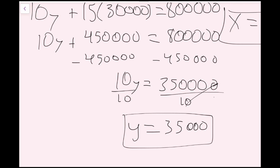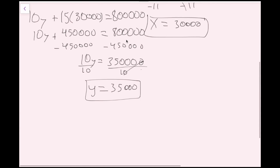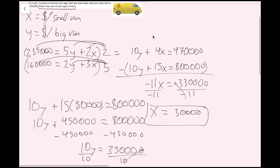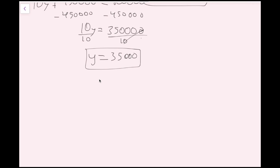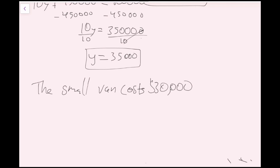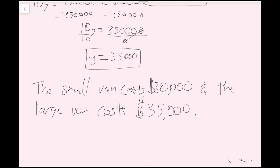The last step is to include a word answer. x, the small van, costs $30,000 and y, the large van, costs $35,000. So: the small van costs $30,000 and the large van costs $35,000. And now we're done.